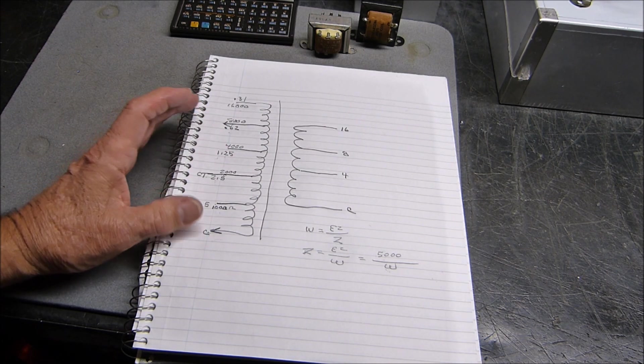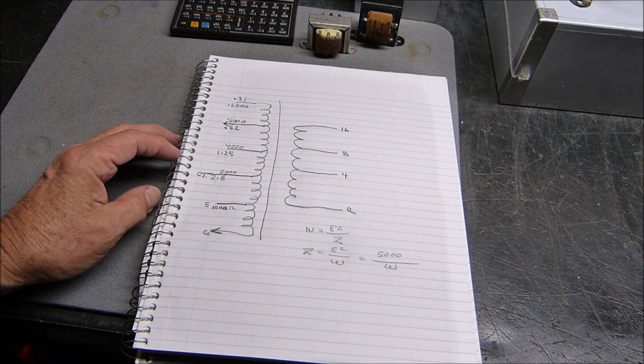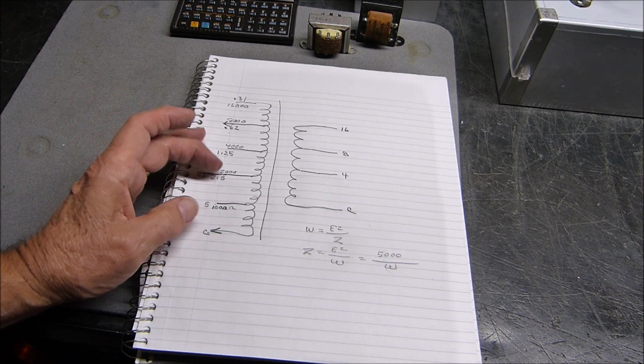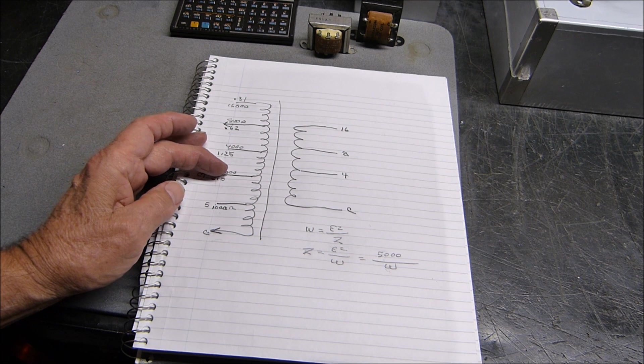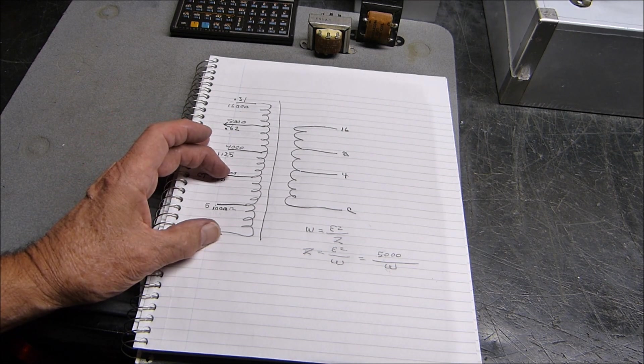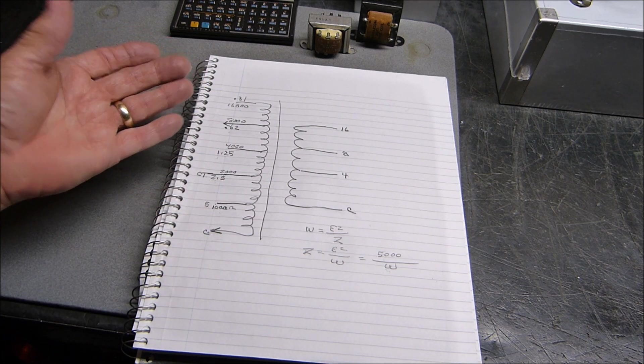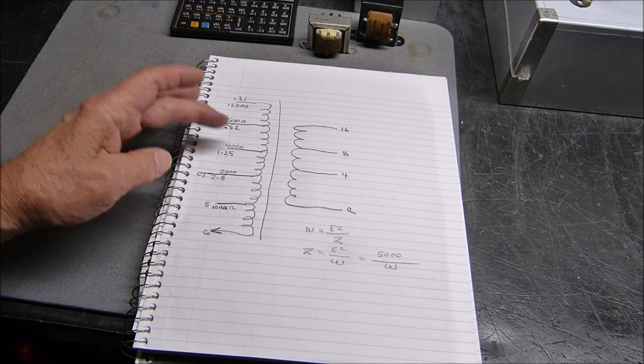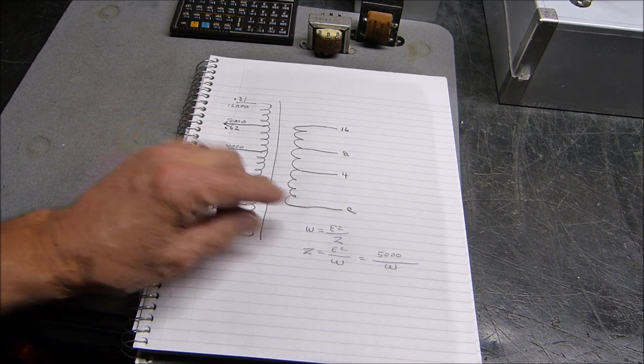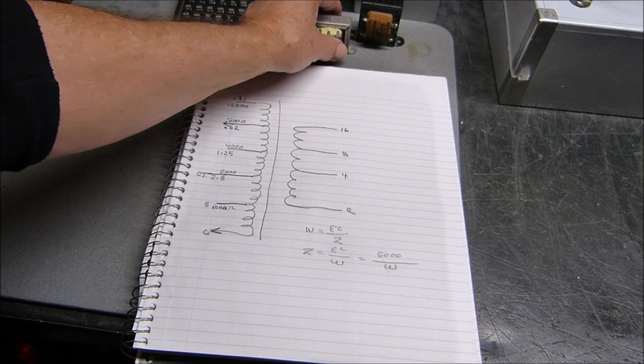We can't have a 2,000 ohm because we'd need a 500 ohm center tap. We don't have that. So if you want a 4,000 ohm, you put there and there, and there's your center tap. Then you've got common 4, 8, 16 ohm output.